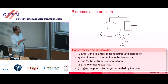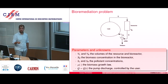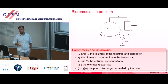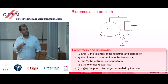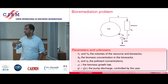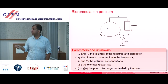Mu, I will come back to it, is the biomass growth law. It is just a law explaining how the biomass grows in the presence of nutrients. It can be a linear law, it can be saturated with a Monod law, et cetera — there are lots of possible mu's. And Q is the pump discharge, the flow, that can be controlled by the user.